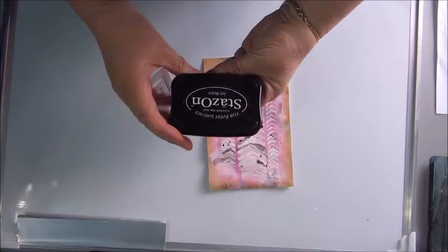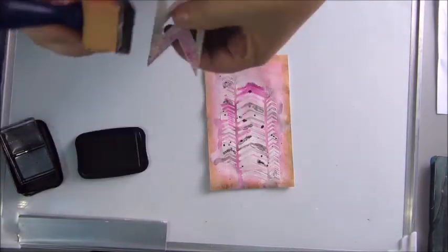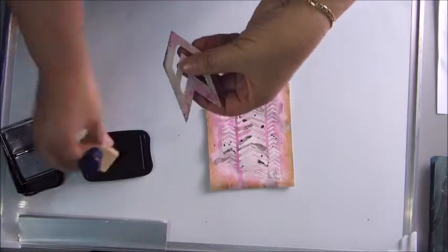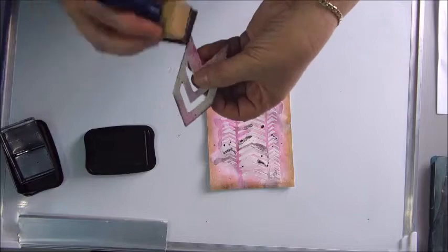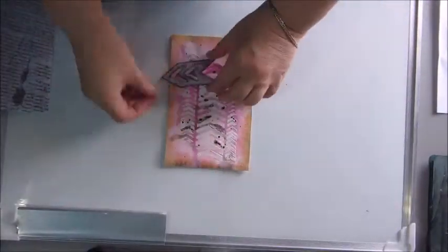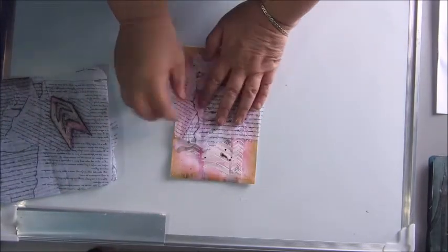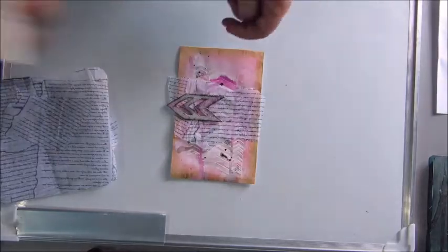So I smudged it with some black spray paints and the Dilution spray to make it a bit more grungy. And then I used some black ink to smudge the edges, kind of.